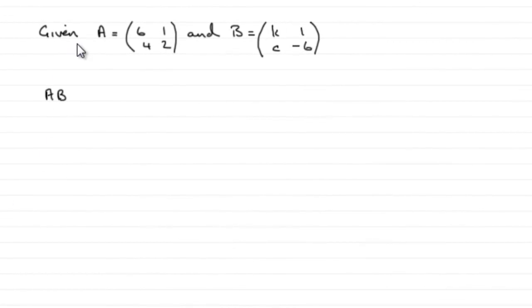So for this part then, we're given these two matrices A and B. A being 6, 4, 1, 2, and B being K, C, 1, minus 6, where K and C are constants, and asked to find out what A multiplied by B gives us in terms of K's and C's.